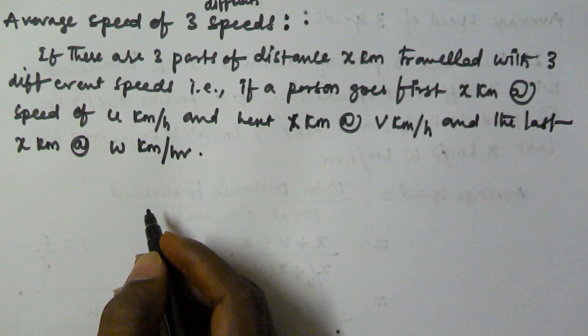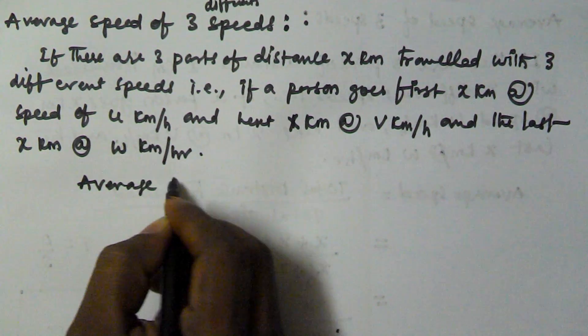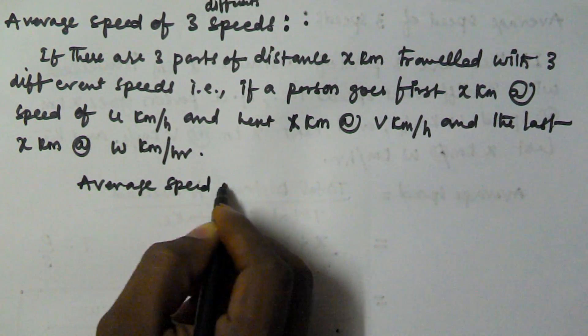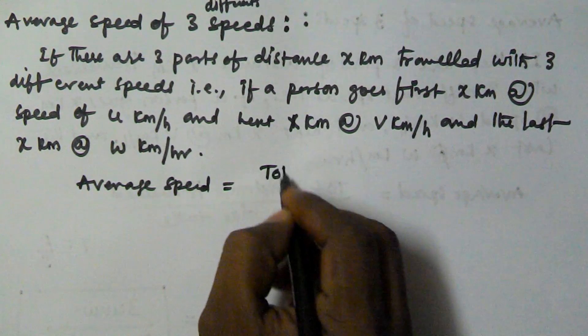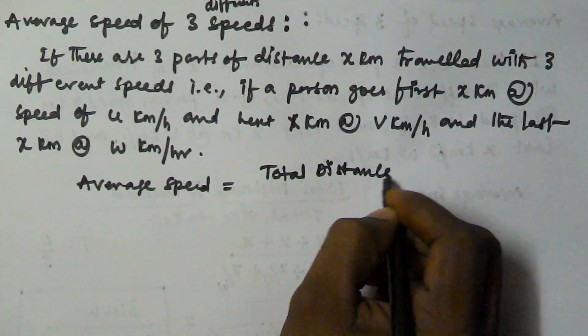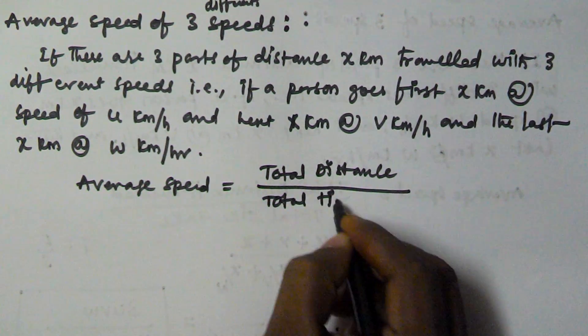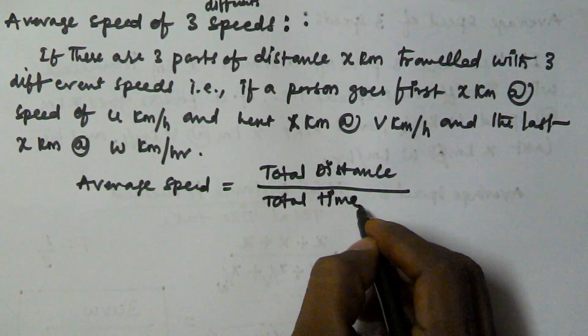Then we have to find the average speed of all 3 speeds. Then average speed is equal to total distance traveled by total time taken.